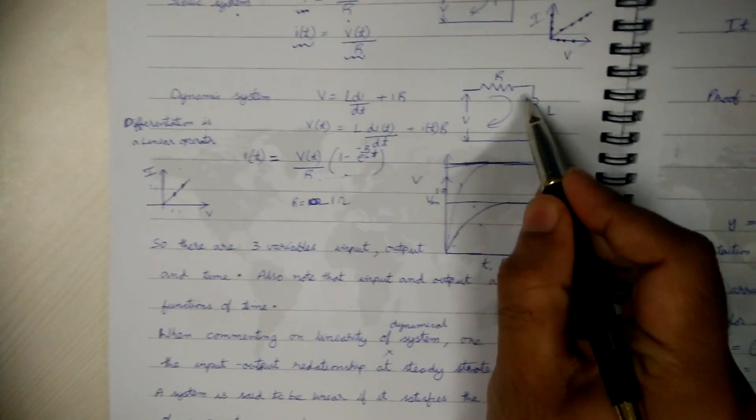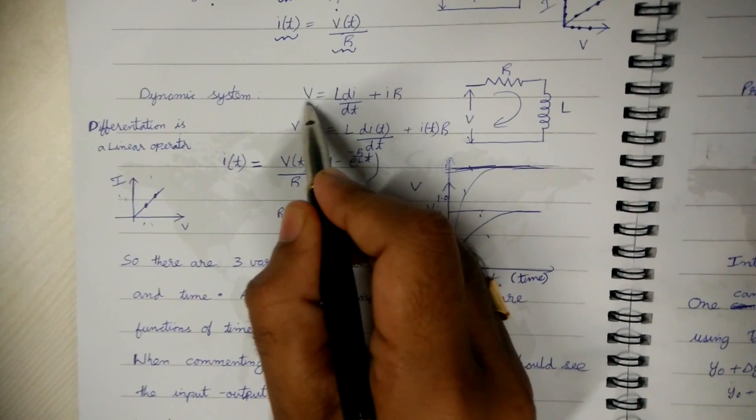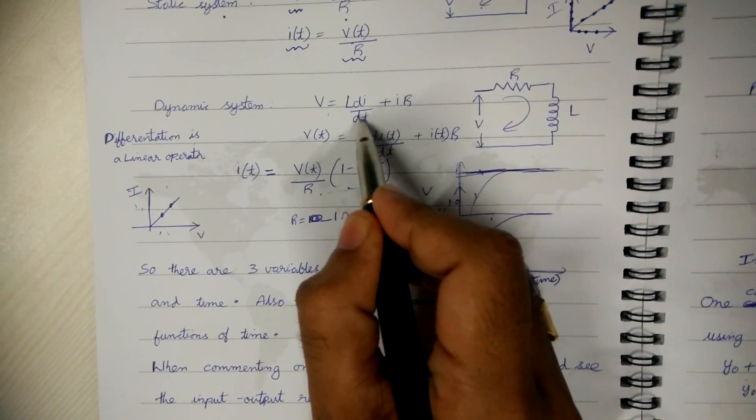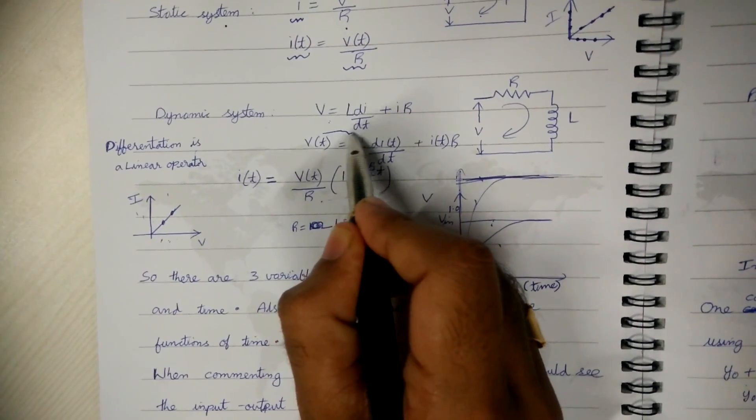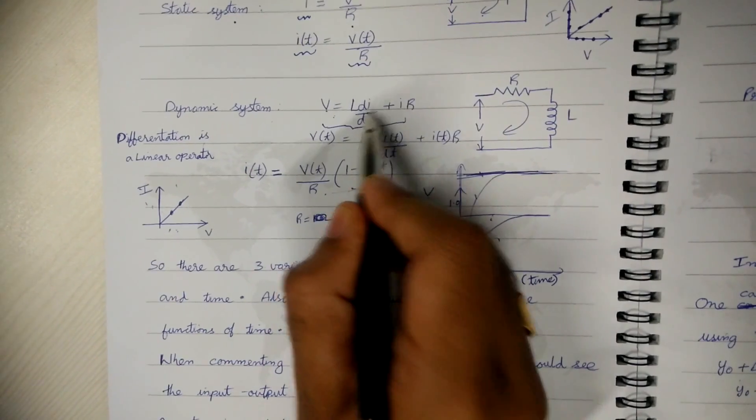Now consider a series RL circuit. This is a dynamic system because there are differential terms in this equation. V is equal to L dI by dt plus IR.